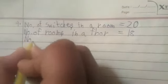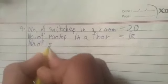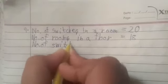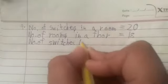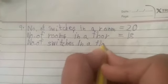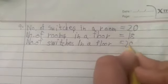And then we will write the number of rooms on a floor, which is 18. Now we will write the number of switches on a floor, and then we will multiply them. So the number of switches for one floor — how many switches on one floor? We will multiply 20 with 18.